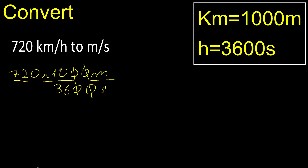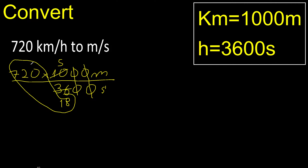Therefore, this can be simplified because it can be divided by the same number. 10 divided by 2 is 5. 36 divided by 2 is 18. Can be divided by 2, divided by 2 is 9.